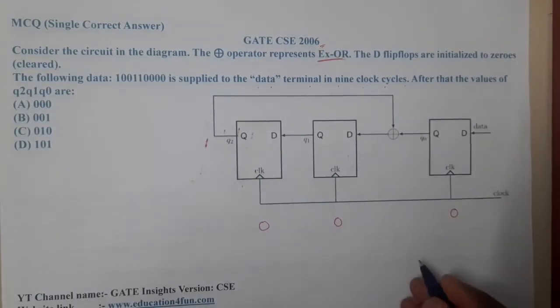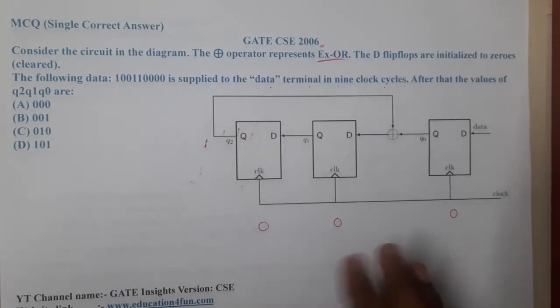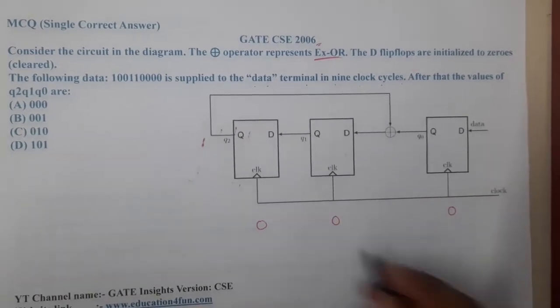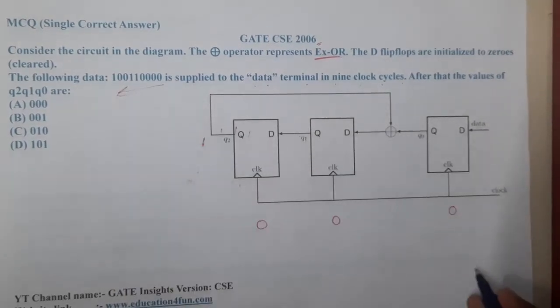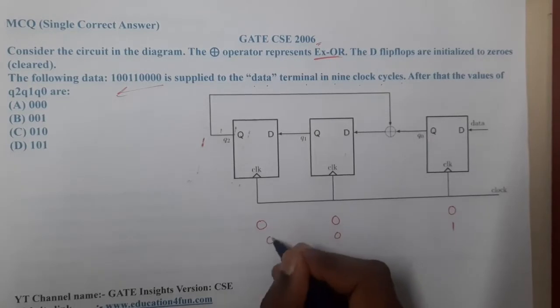If the option is not matching, we will check the other way. According to me we should push in that way only. First we will push this 1, then this 0, then this 0.